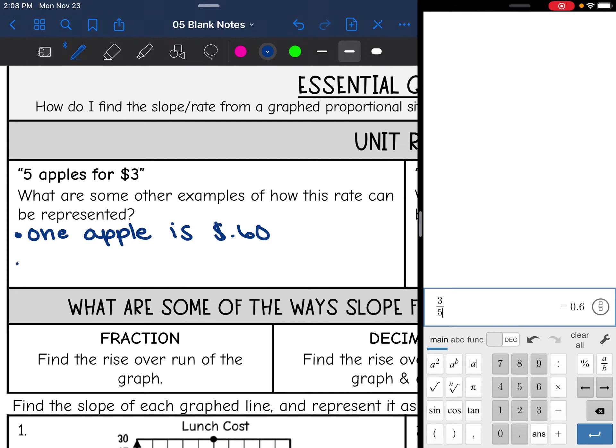Another easy one I can think of off the top of my head is if we double it, 10 apples for $6. So there's a couple of different ways to represent this rate right here.